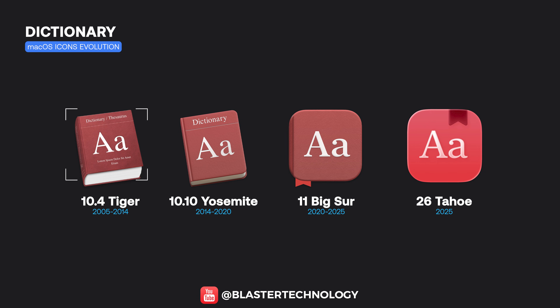The Dictionary icon evolved from a realistic book with volume and physical details to a simple typographic symbol, where the emphasis is placed on letters and color rather than the object itself.